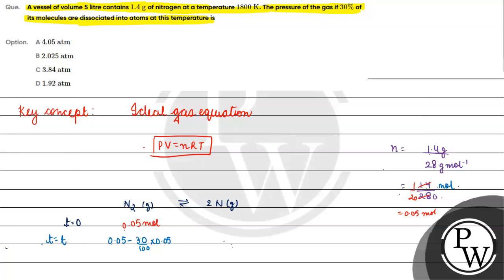Setting up the dissociation: initially 0.05 moles of N₂. The amount dissociated is 30% of 0.05 = 0.015 moles. So remaining N₂ = 0.05 − 0.015 = 0.035 moles. The nitrogen atoms formed = 2 × 0.015 = 0.030 moles.